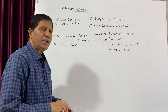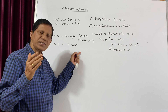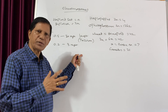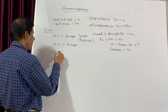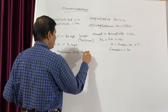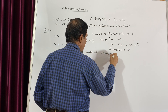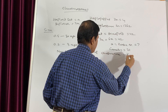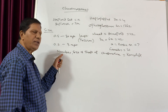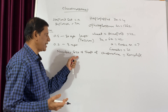Now if we try to study how many chromosomes are present in a cell, what is the size of the different chromosomes, and what is the shape of different chromosomes — that means the study of number, size, and shape of chromosomes is known as karyotype. Karyotype means the study of all the morphological characters: number, size, and shape of the chromosomes.